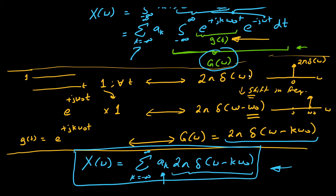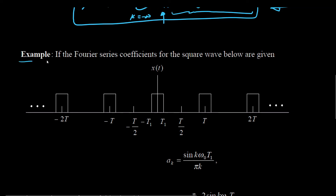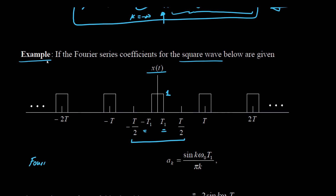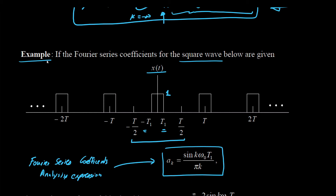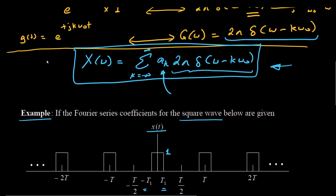Now let us look at examples applying this to periodic signals. In Example 1, we have a periodic square wave x(t) with amplitude 1 between −T₁ and T₁, and overall time period from −T/2 to T/2. From our prior discussion of Fourier series, the analysis coefficients are ak = sin(kω₀T₁) / (πk). With these coefficients, we can plug them into the expression to obtain the Fourier transform X(ω).